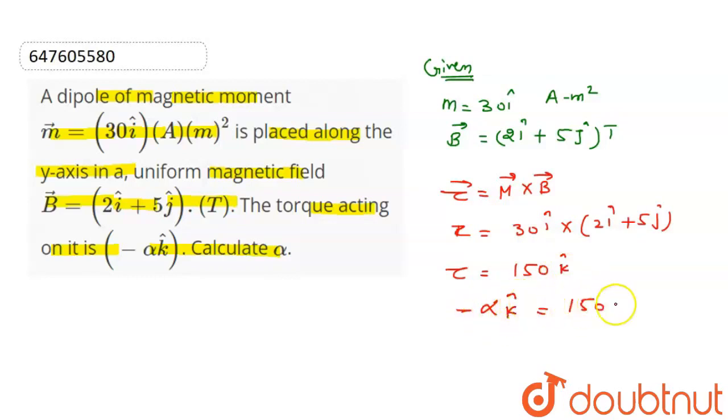So 150 k cap. K cap cancels out, then alpha equals minus 150. This is our answer.